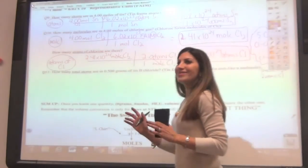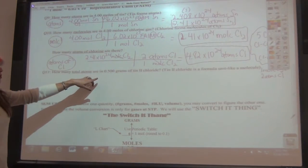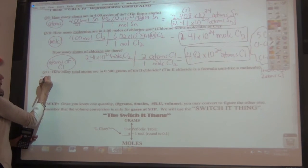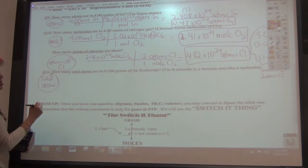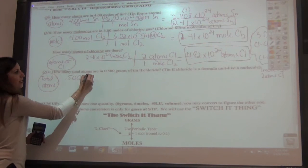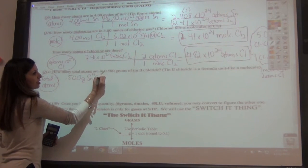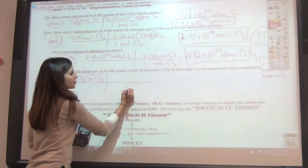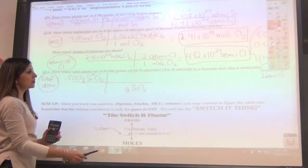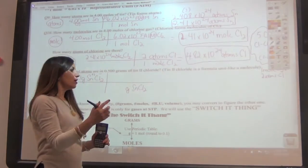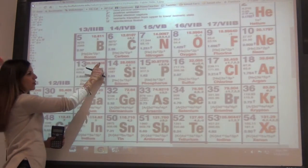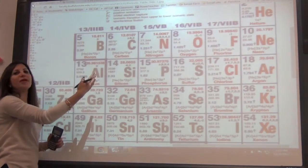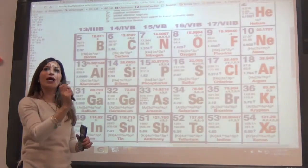Now for the last problem, which is probably the hardest type: how many total atoms are in 0.500 grams of tin(II) chloride? First, circle 'total atoms.' Tin(II) chloride is Sn2+ and Cl-, so when you crisscross it, you get SnCl2. Throw in a bridge, cross units opposite — grams of SnCl2 on the bottom. Since we're starting in grams, the first ratio that helps us is going from grams to moles using an L-chart.